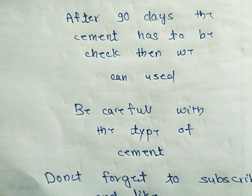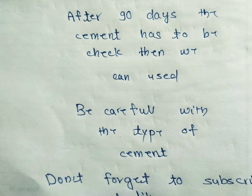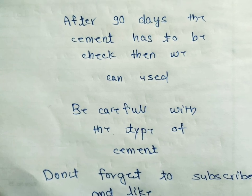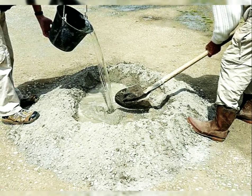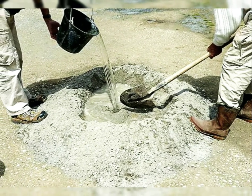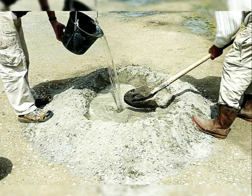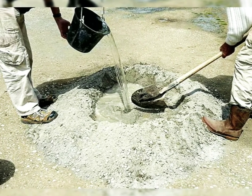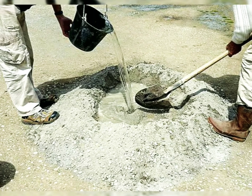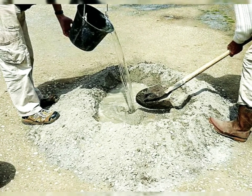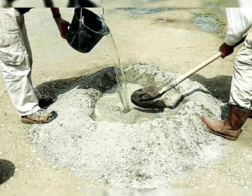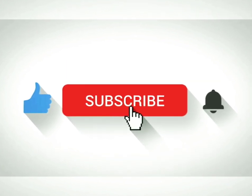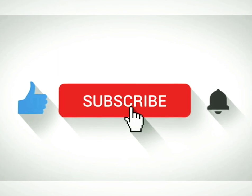We should also check which type of cement we are using. In most construction work, we use Portland cement. Additionally, we can use cement up to three months after the manufacturing date. After three months, we must test and check it before use, verifying strength and other properties. The date of packing and date of manufacturing are very important.